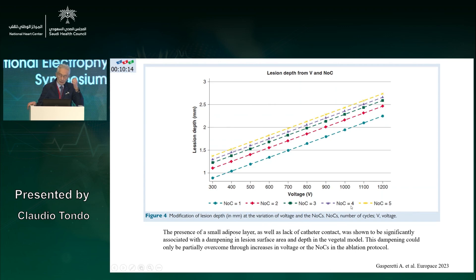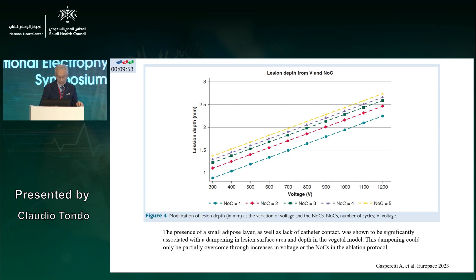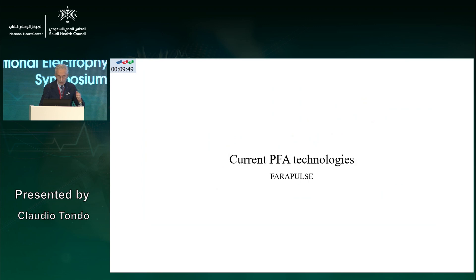During the live case, we saw that the number of applications per vein is related to the catheter configuration — eight applications per configuration. This is what has been recommended by the company to achieve a good lesion.